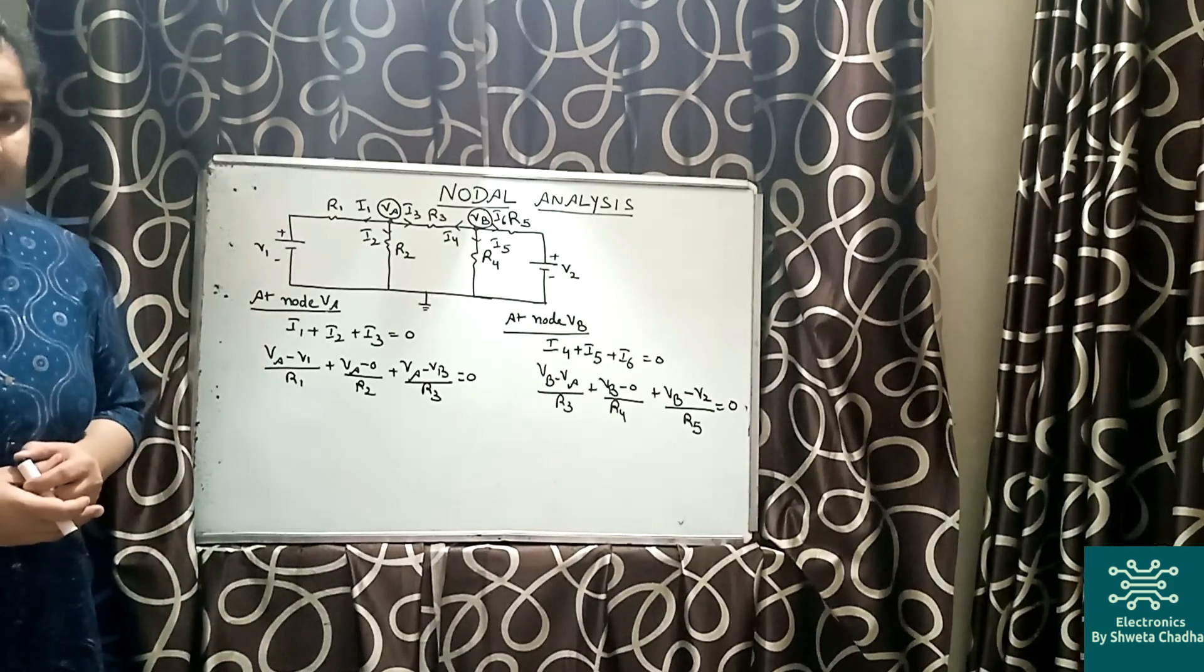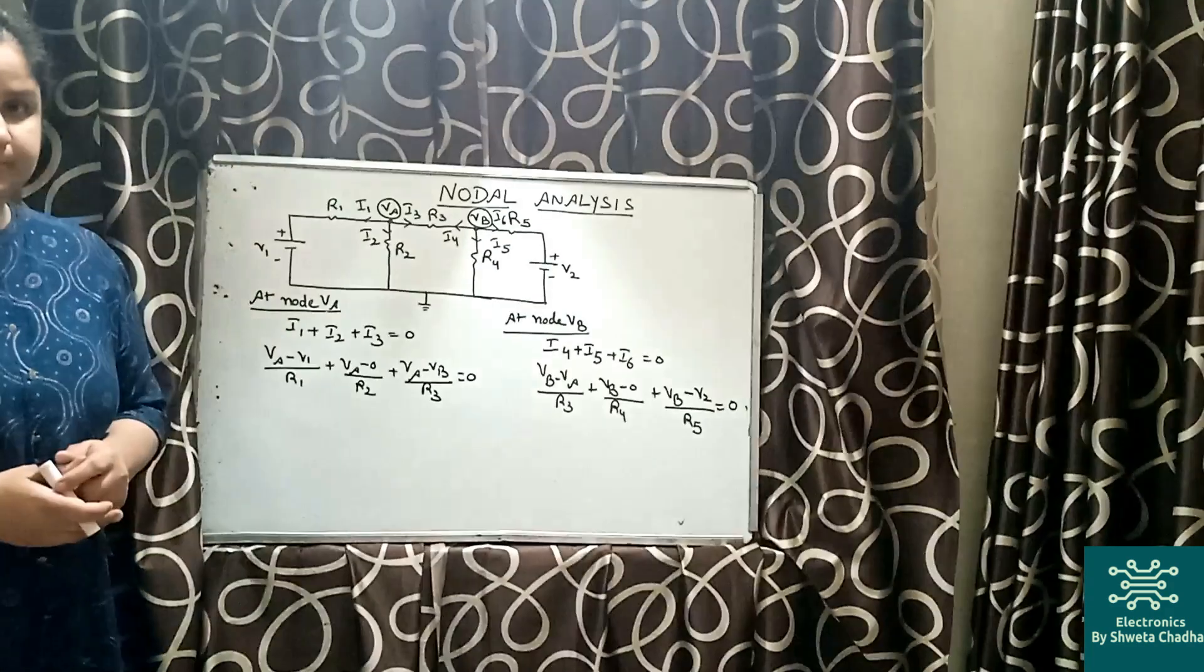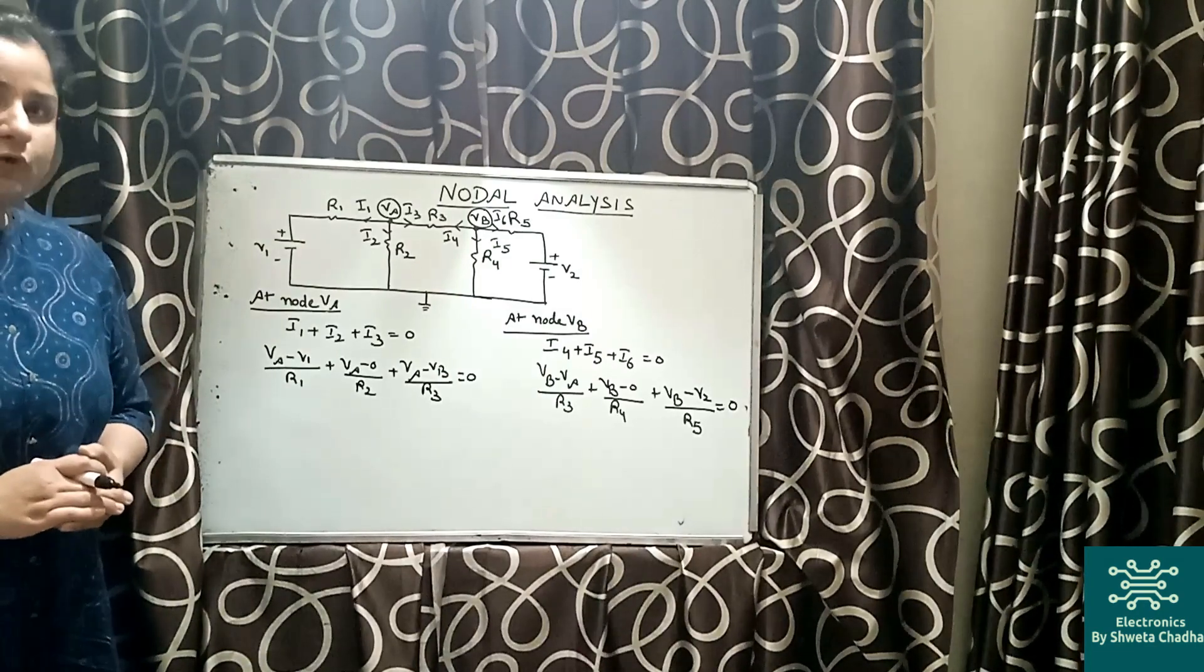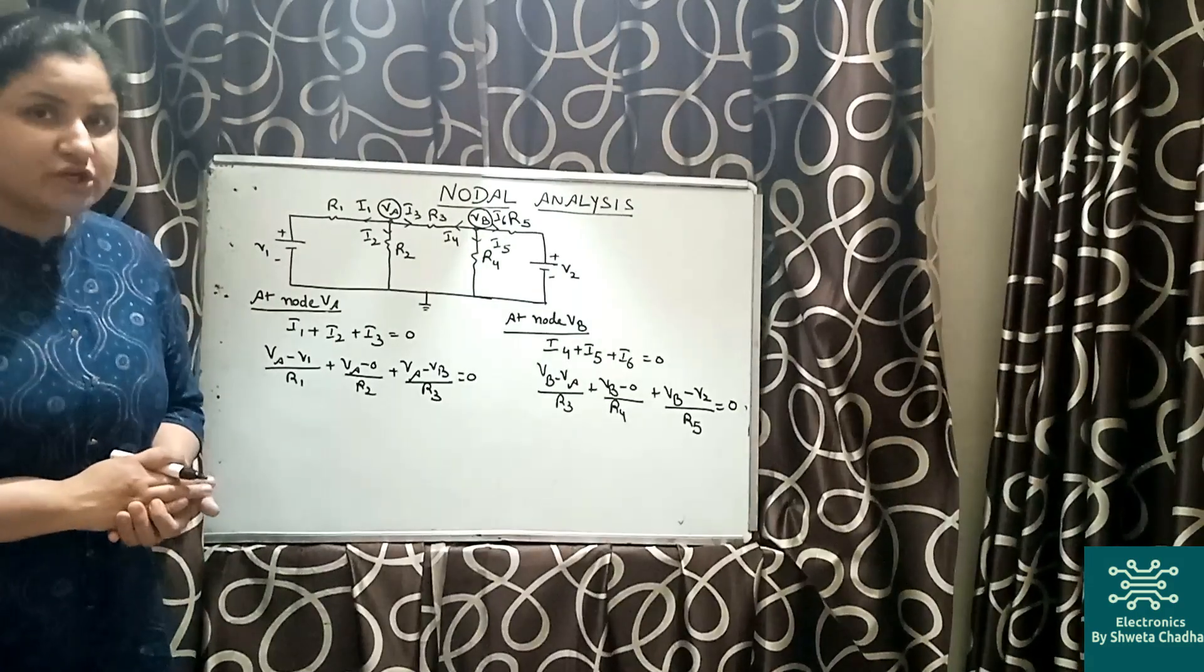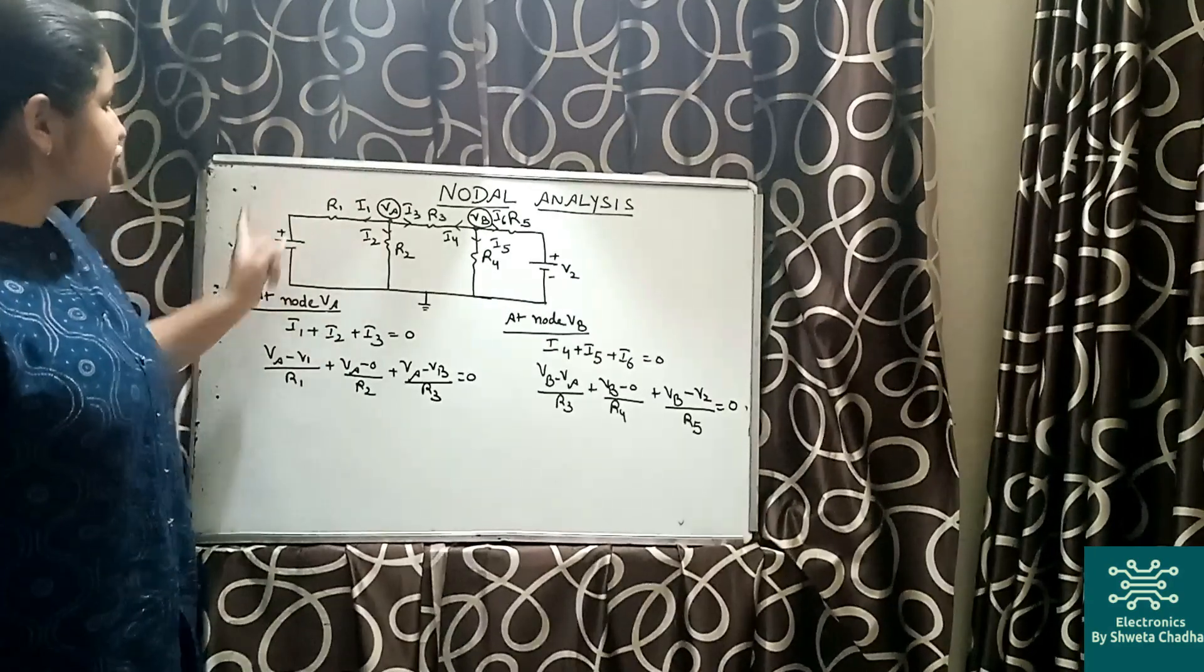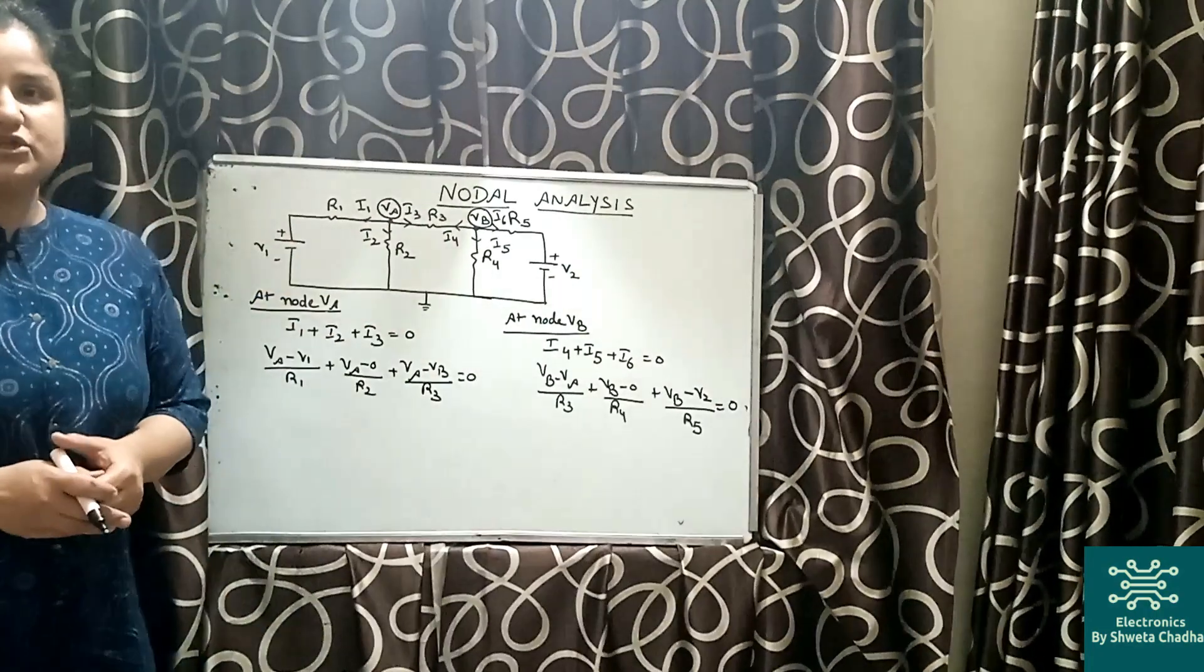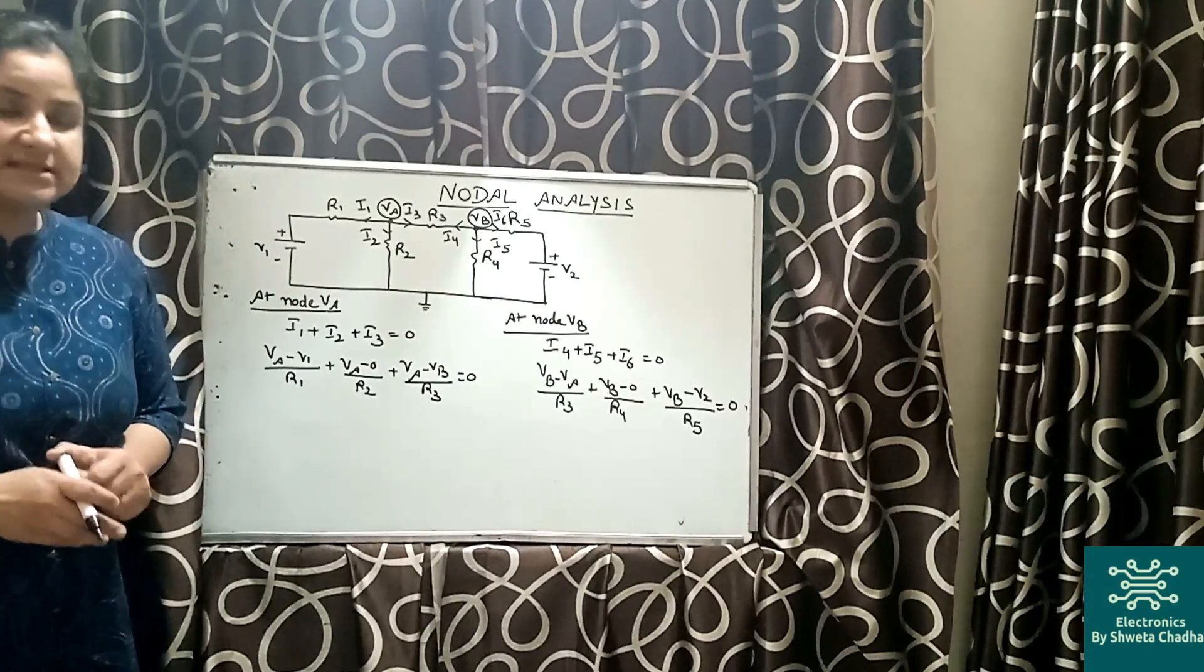Coming back to the point, at node VA, as the potential at node VA is the highest potential, the current is going to flow from higher potential to lower potential. So the direction will be outward: higher potential to lower potential, high potential to lower potential, similarly high potential to lower potential.